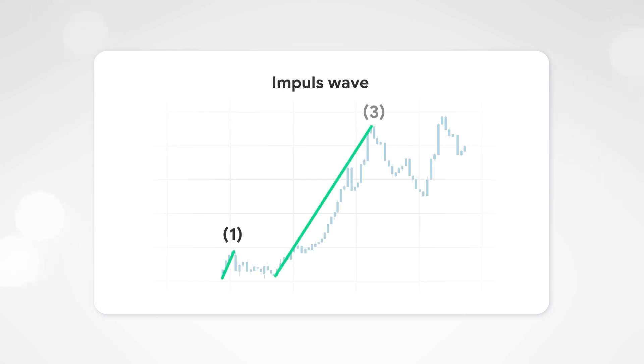The first, third, and fifth ones are called the pulse waves, while the second and fourth are correctional, respectively.